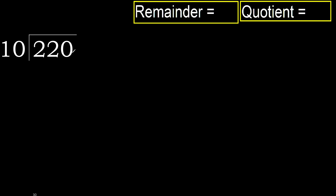220 divided by 10. 2 is less, therefore next. 22 is not less, therefore we work with 22.